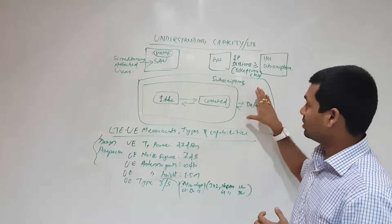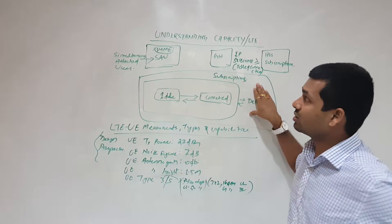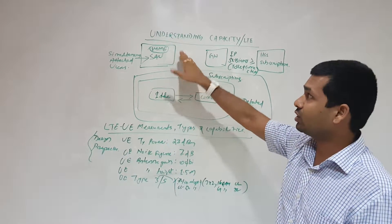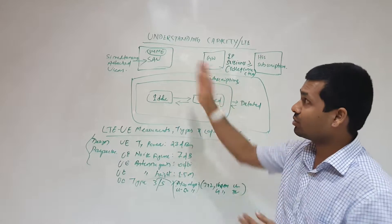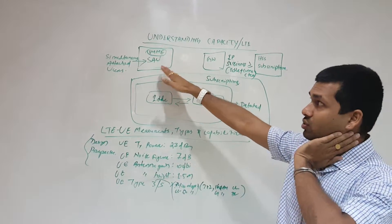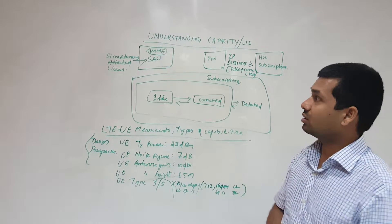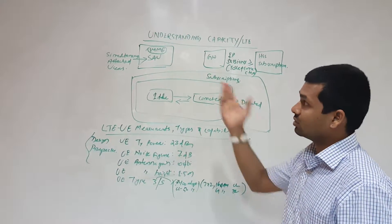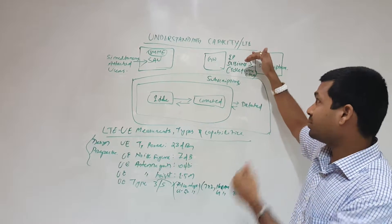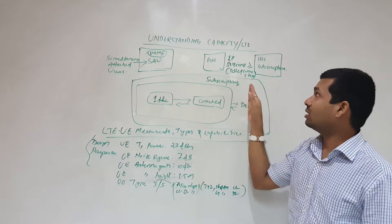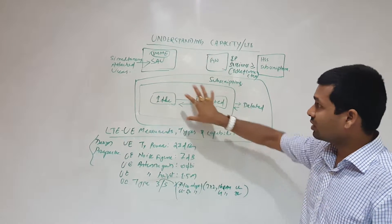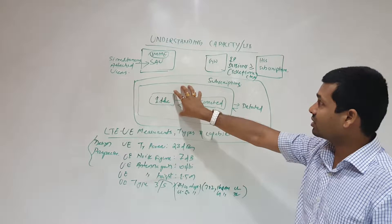We should understand these vendor-specific points. First, simultaneous attached users per MME - we need to understand how many simultaneous users will be allowed in the MME. It depends on what kind of vendor equipment we are using. Second, IP sessions. The number of IP sessions would be greater than or equal to idle or connected users. Total IP sessions is the combination of idle and connected users from the gateway or packet gateway which allocates the IP.